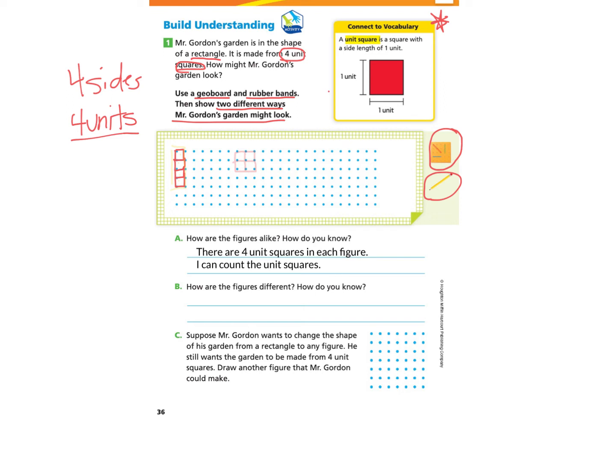Now let's look at B: how are the figures different and how do you know? When I look at the two figures, I see that they are different shapes. I have arranged the unit squares in different ways. So that's how I know that they are different.